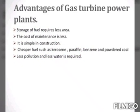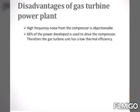Advantages of the gas turbine power plant: storage of the fuel requires less area; the cost of maintenance is less; it is simple in design; different types of fuel may be used like kerosene, paraffin, benzene, and powdered polymerized coal; less pollution as compared to steam power plant; and less water is required.